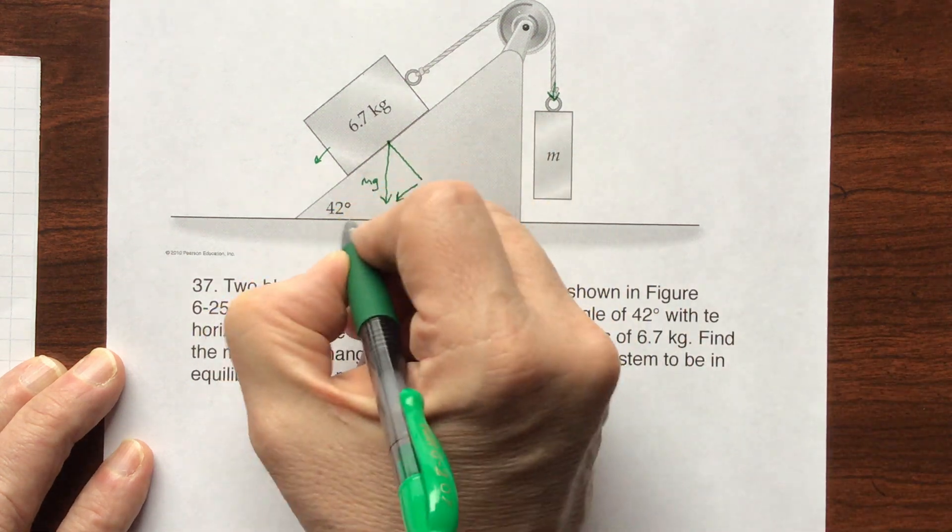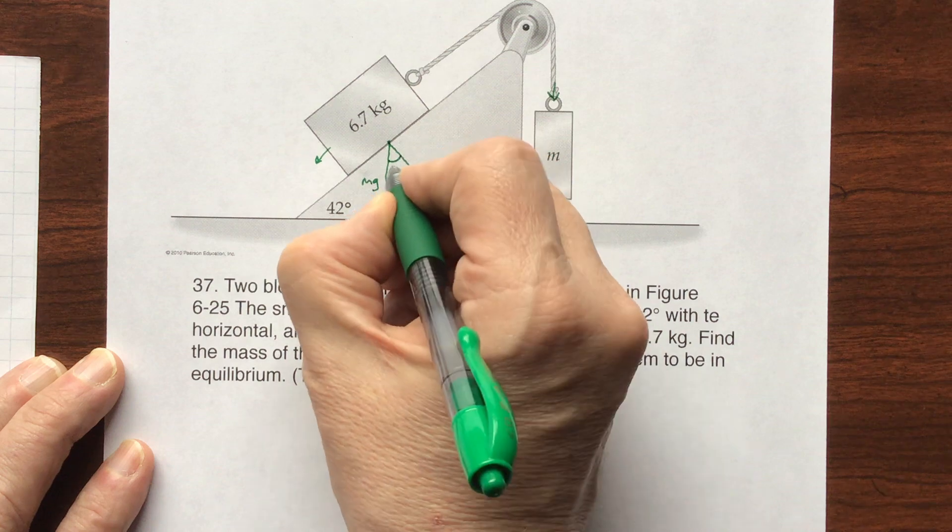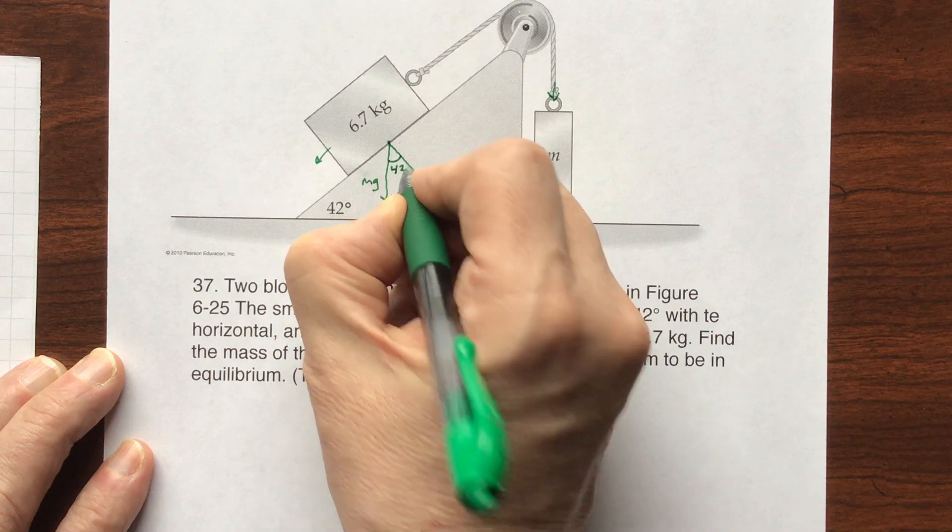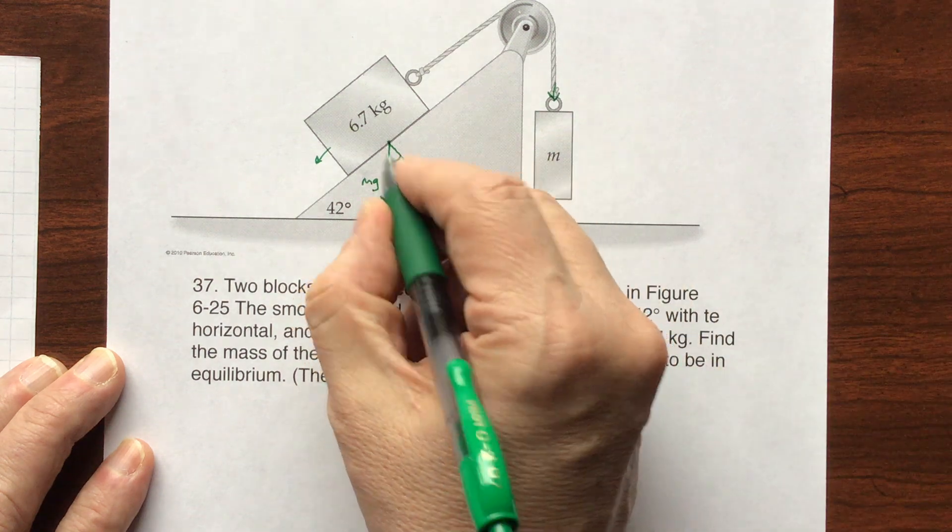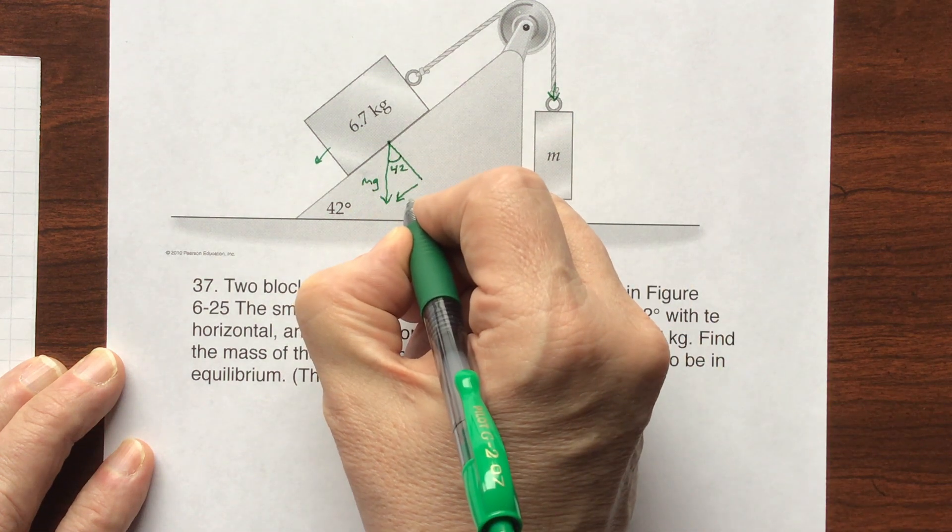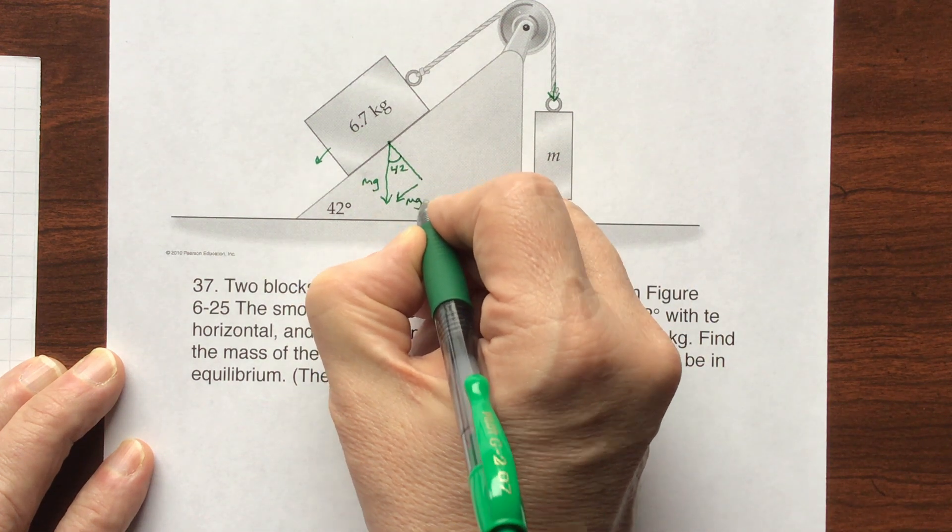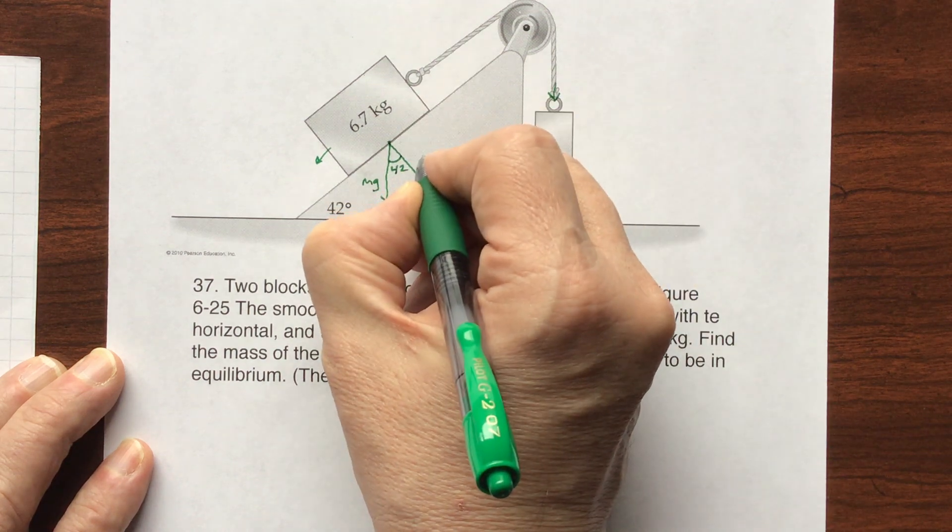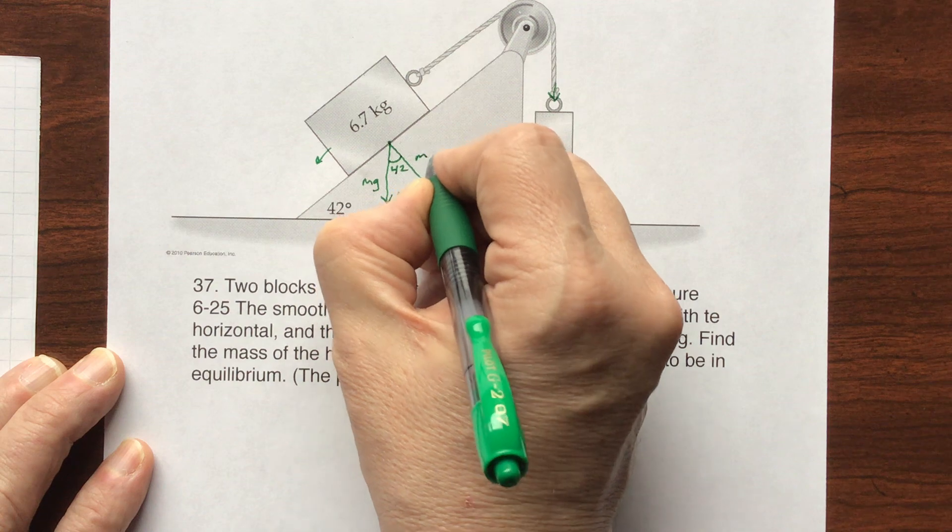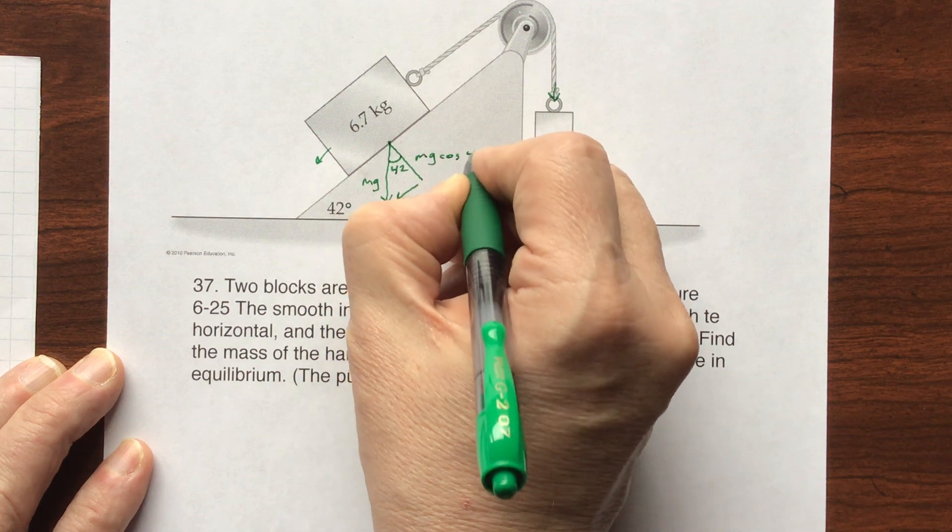If this is 42 degrees, it just happens that this also will be 42 degrees conveniently. And so by trig laws, this is going to be mg sine of 42 degrees, and this is mg cosine of 42 degrees.